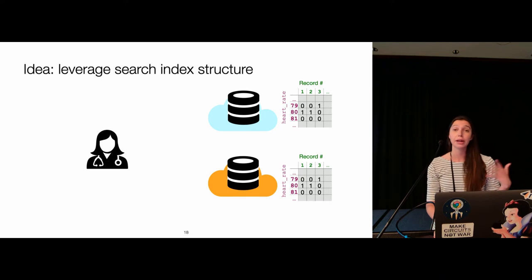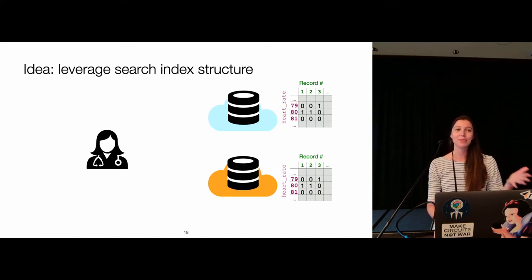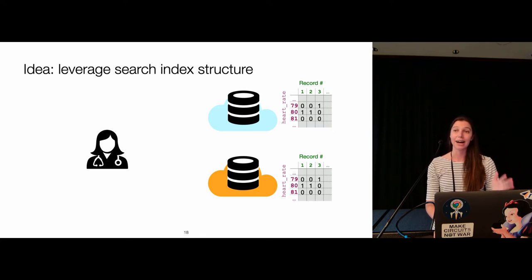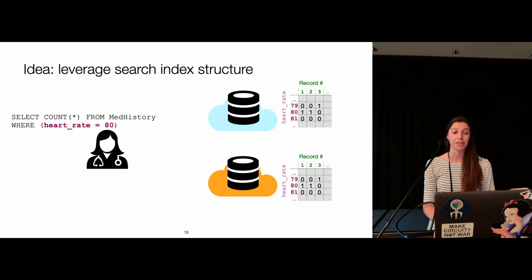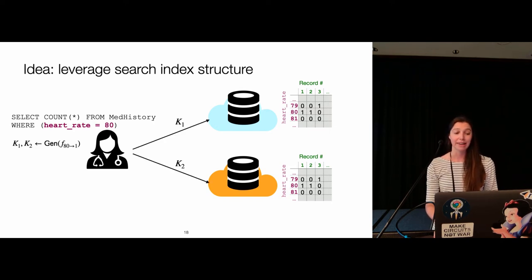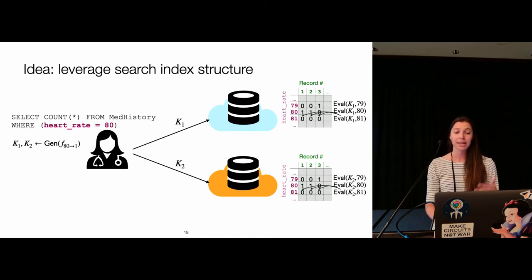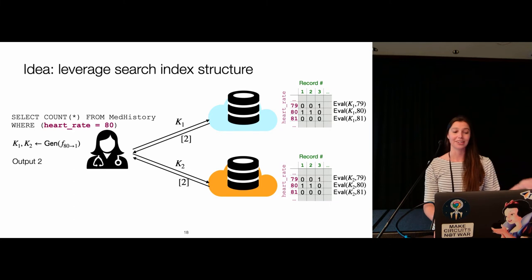To search over private data using this search index structure: each server stores a copy of this table, with the private portion in gray. Suppose the doctor wants to compute the number of records where heart rate equals 80. We generate FSS keys for the function evaluating to one at point 80, send the keys to servers, and for each row, evaluate the FSS keys on the value for that row. Multiplying the evaluation by each value in the row and summing across rows selects just row 80, giving shares of the sum of all values in that row — the number of records with heart rate equal to 80. The servers send back shares of two; the doctor combines them to get the result.